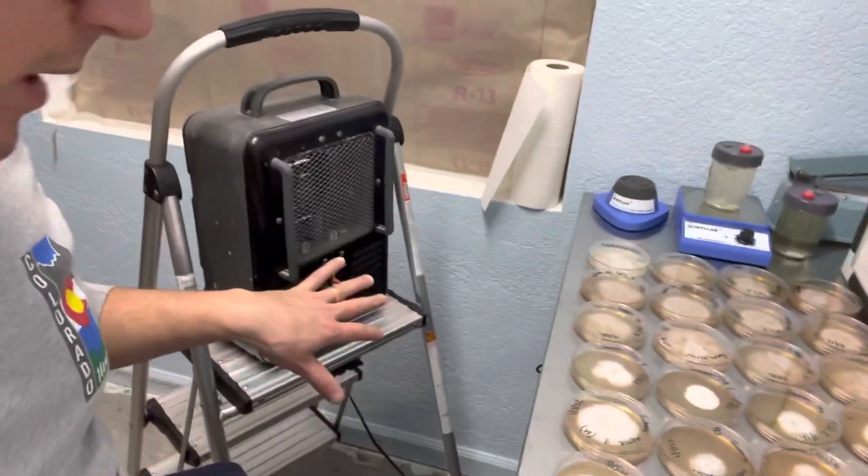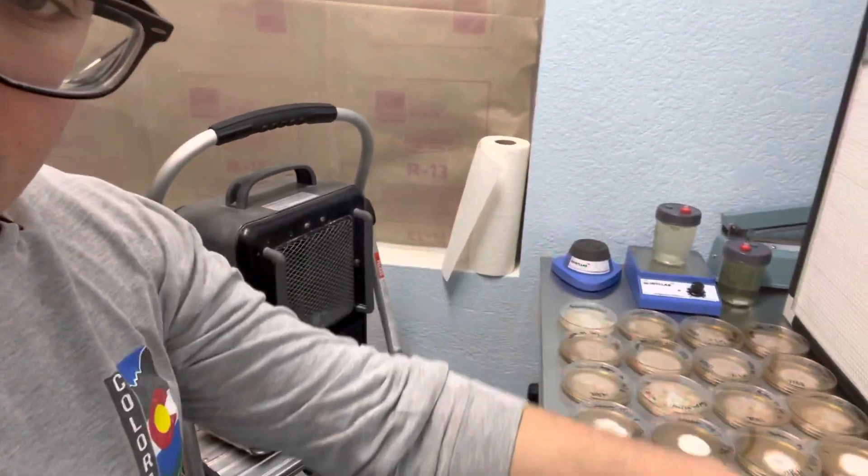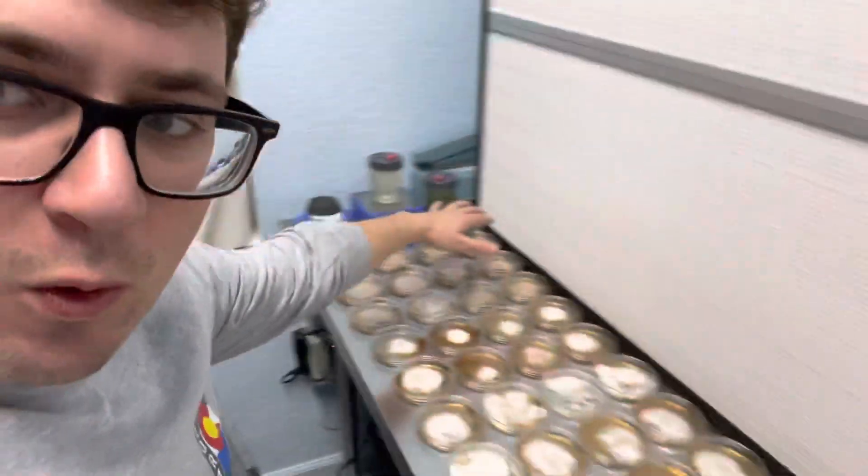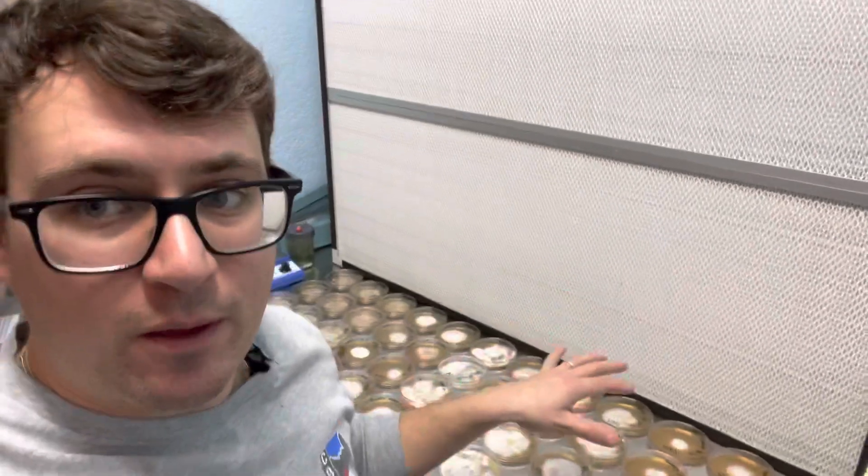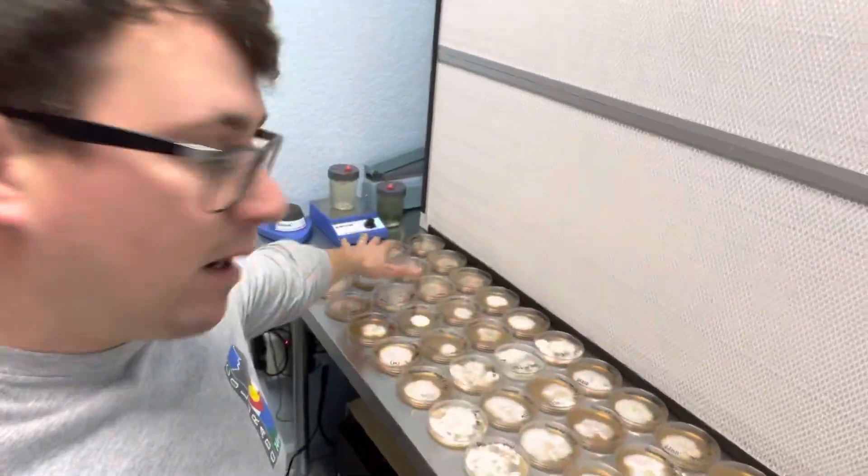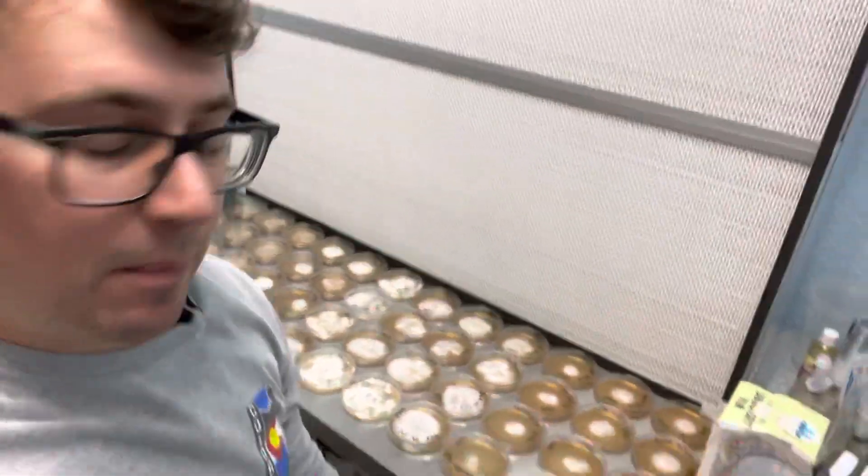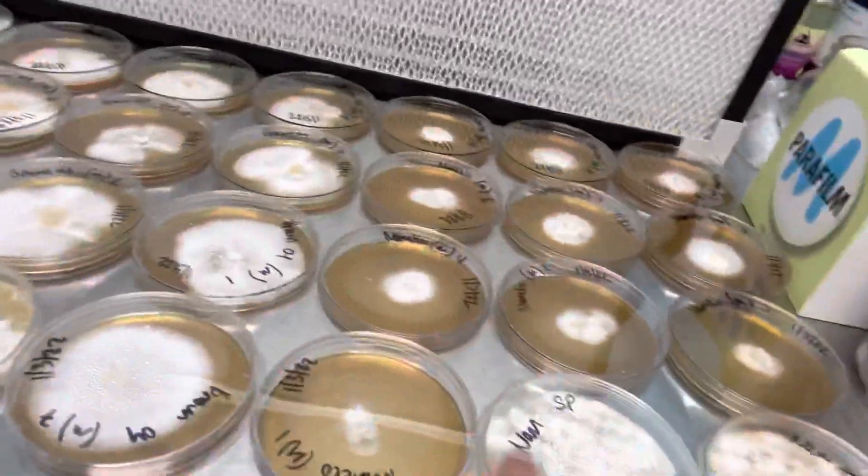...that I do is I put a heater just over the surface of the plates so that it warms the air right above the petri dishes. In about 20 minutes it clears up these water droplets. You can see there's still some left over.